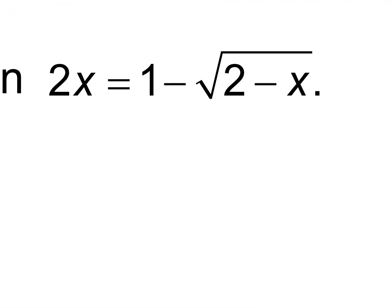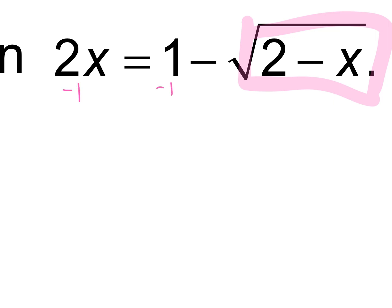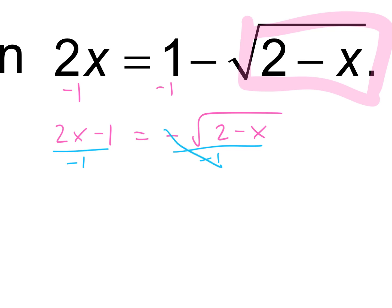The first goal is to isolate the radical — we want to get the square root all by itself. So what do I need to do to isolate my radical here? Subtract 1, move it to the other side. So I have 2x minus 1 is equal to the negative square root of 2 minus x. Now divide by negative 1 to get our radical all by itself, and we just flip the signs on the left. So negative 2x plus 1 is equal to the square root of 2 minus x.